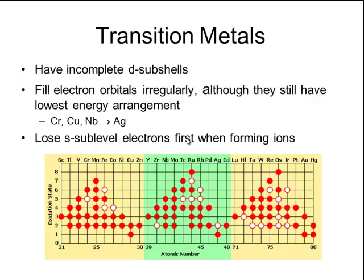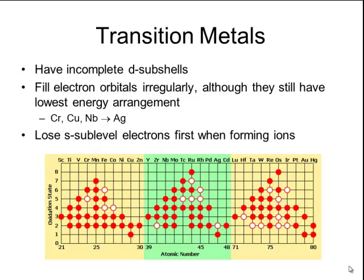The transition metals generally have incomplete d subshells, such as d1, d2, d3, d4, and so on. There are many transition metals that actually fill their electron orbitals irregularly, although they still have the lowest energy arrangement according to the Aufbau principle. For example, you would think chromium's electron configuration would be 4s2, 3d4, but it's actually 4s1, 3d5. The same is true for copper, as well as the elements niobium through silver of period 5.